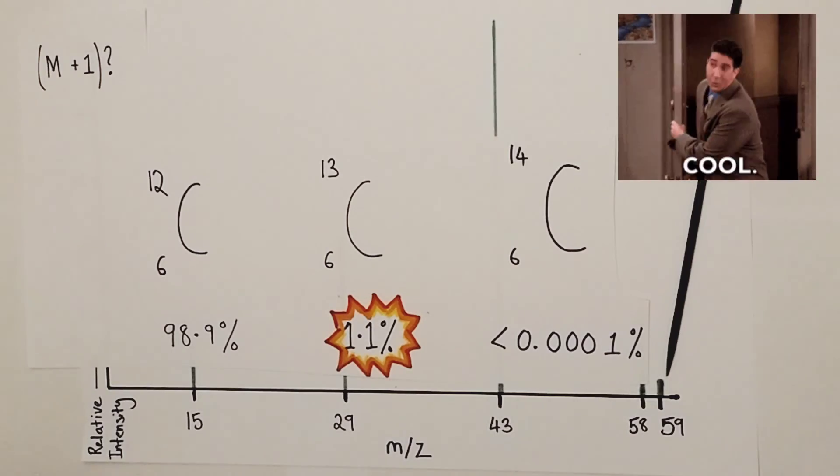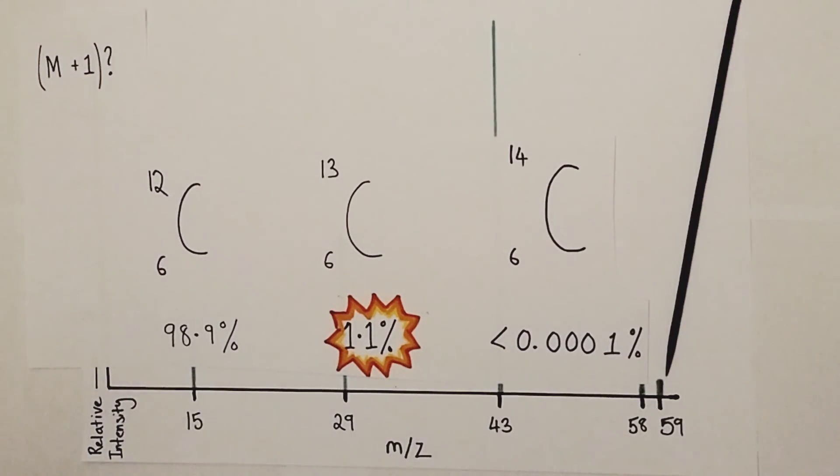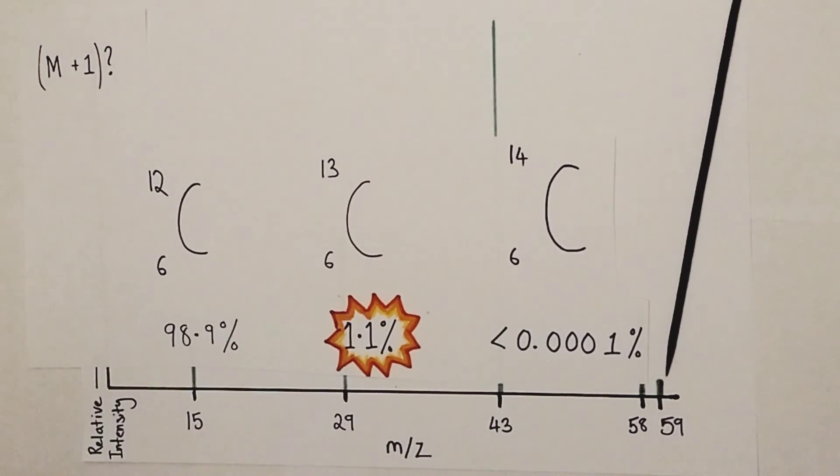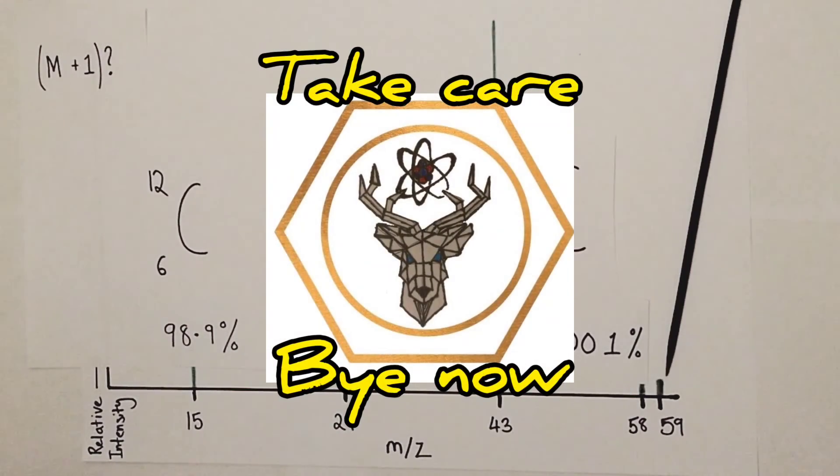How cool is that? Right folks, that brings this initial video on interpreting mass spectra to a close. Hopefully that will help you interpret some mass spectra for some alkanes. Do check out future videos. I think the next one is going to be on halo alkanes, a useful one because it again has this isotopic idea embedded into that topic. I hope you found this useful. As always, thanks so much for listening, it is hugely appreciated, and I look forward to talking to you in the next Alchemist's chemistry video. Take care. Bye now.